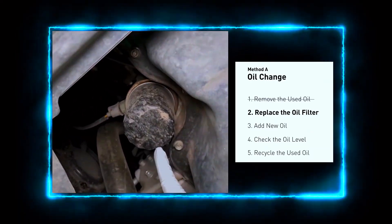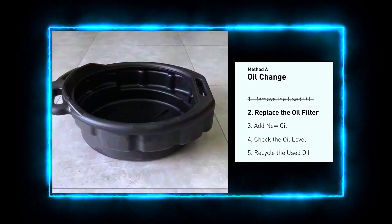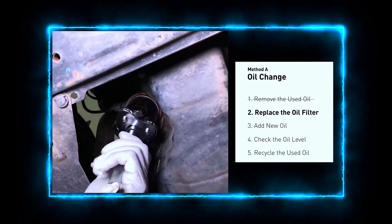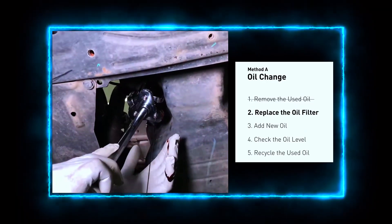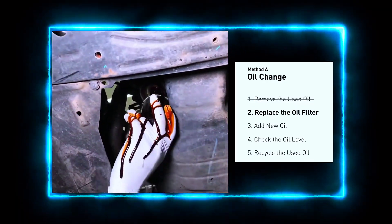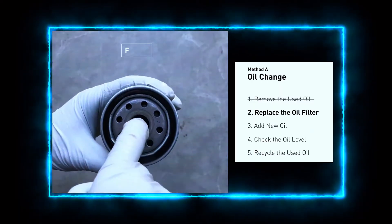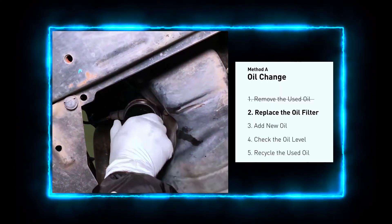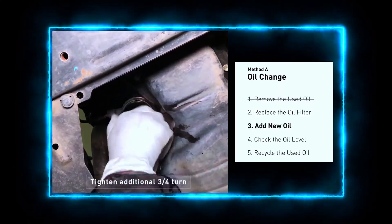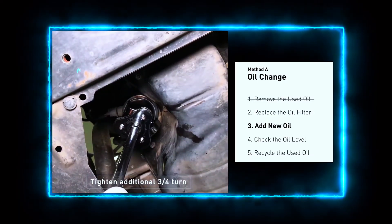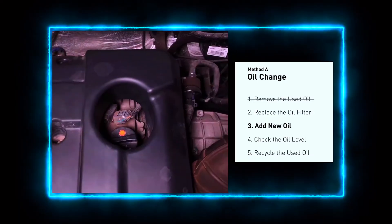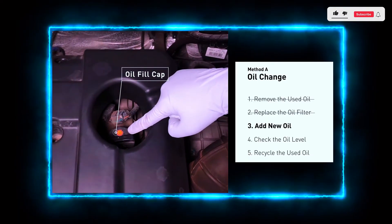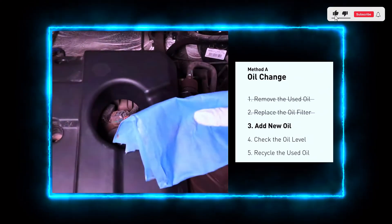Now let's replace the oil filter. Using your oil filter wrench, loosen and remove the old filter. Before installing the new one, lubricate the rubber gasket with a bit of fresh oil. Screw on the new filter hand tight. With the old oil drained and the new filter in place, it's time to add fresh oil.